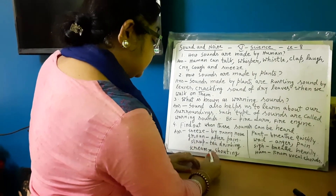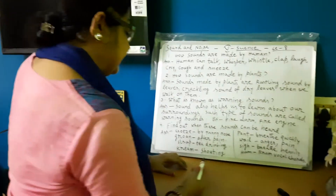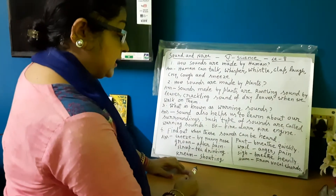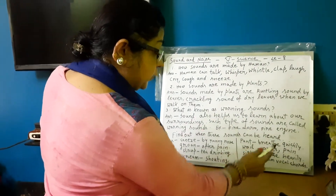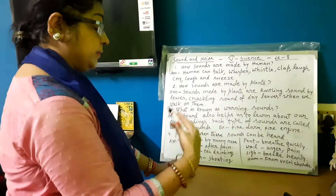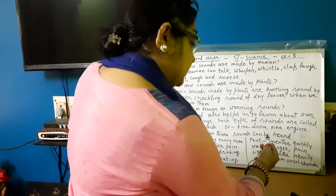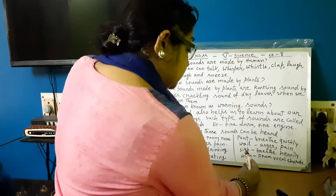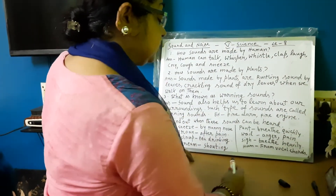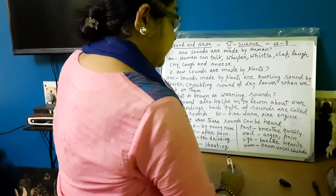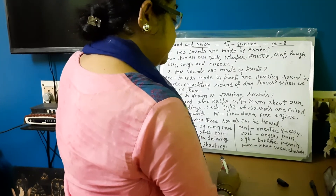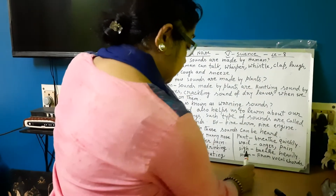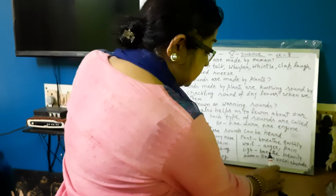Slap. Scream — screaming. When you do it, the mood is called pan. Oil, anger, pain, and sigh. Sigh is called breathe heavily, which means deep breathing time. When you breathe deep, you say sigh. Hum is called from vocal cord.